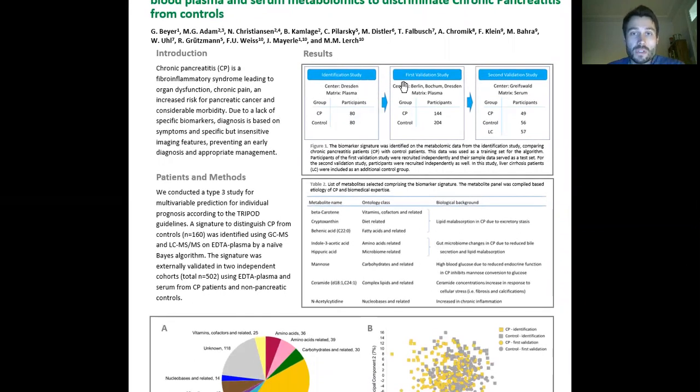Figure 1 gives you an overview of the sub-studies conducted. The first so-called identification study was conducted in Dresden using 80 chronic pancreatitis patients and 80 controls. The first validation study, which used the same matrix, which was blood plasma, was conducted at three centers in Germany. The second validation study for validation of the robustness of the assay used serum instead of plasma and was conducted at one center in Greifswald.